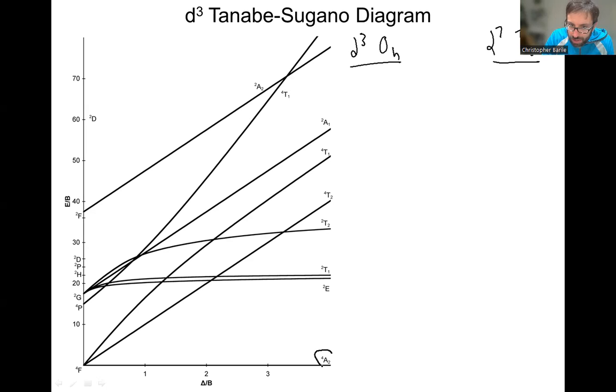The first thing I like to look at is the ground state, and we can see that the ground state here is quartet A2, and it's going to be quartet A2G. We have that G subscript if we're talking about octahedral, or quartet A2 if we're talking about tetrahedral. So let's just make sure that we know where that's coming from.